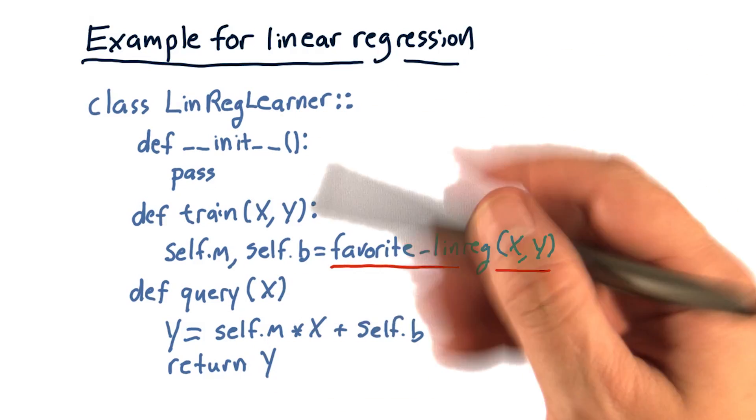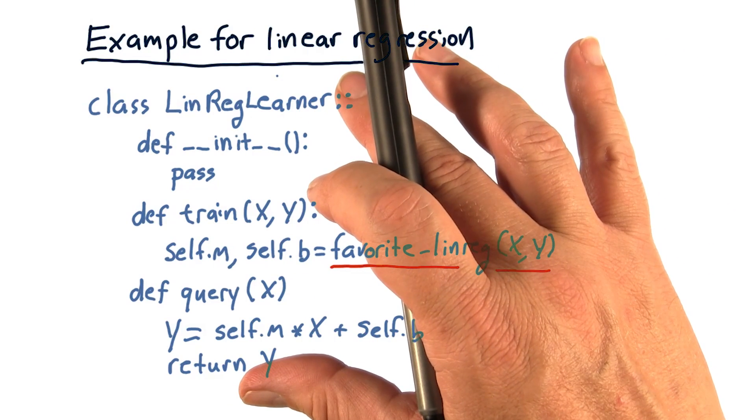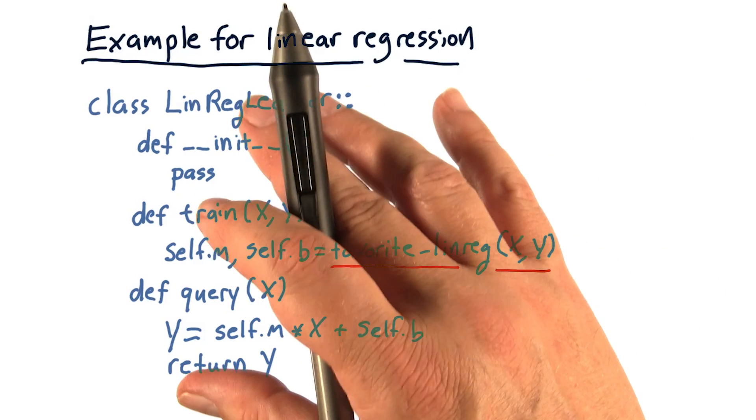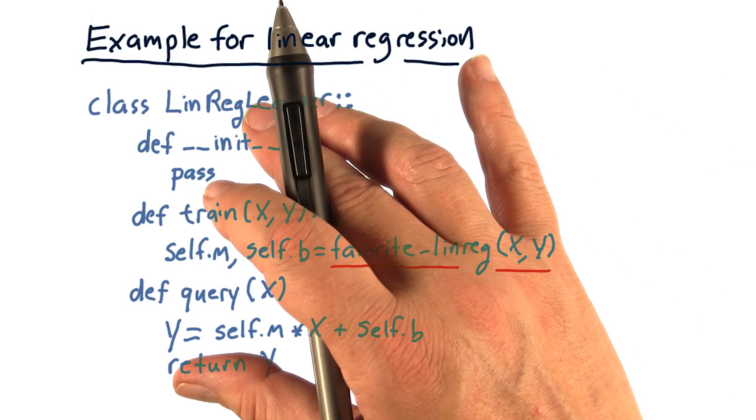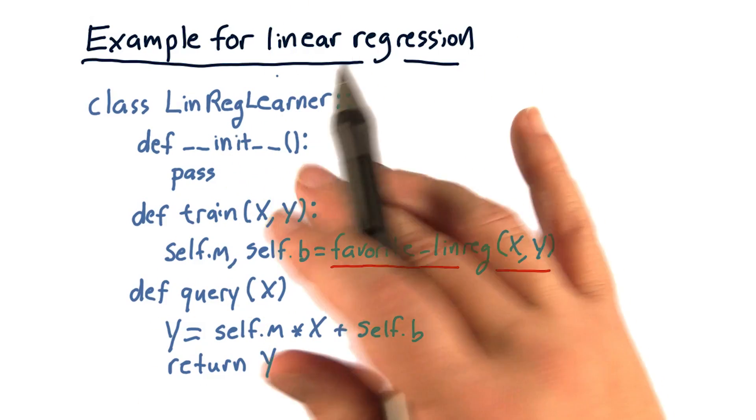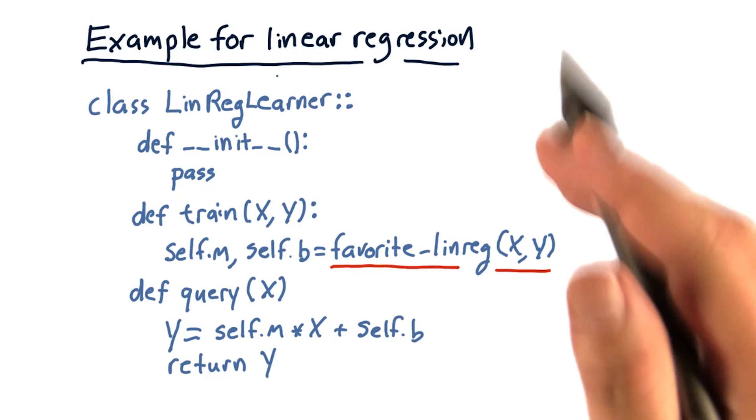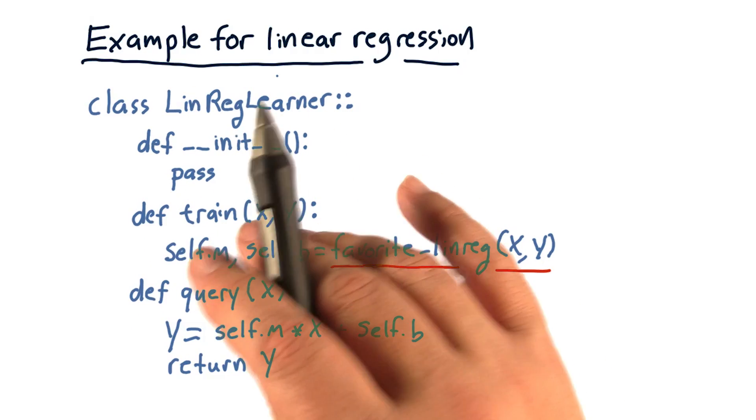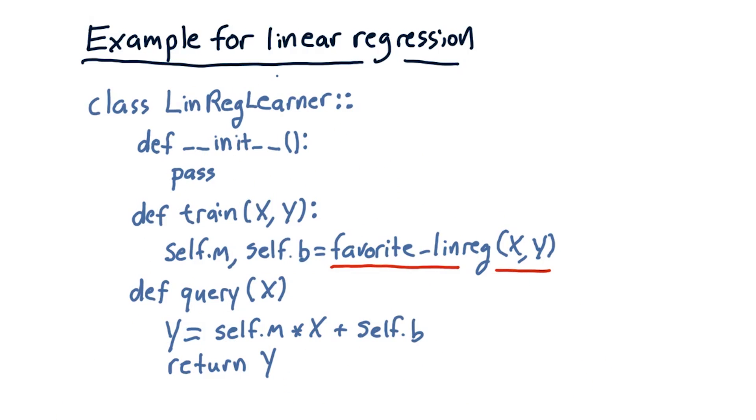In short, this is literally how short your linreg learner can be. Now, the KNN API is going to look exactly the same. And the reason for that is if we have the same API, we can easily mix and match and try training and querying with the different algorithms and see how they compare.